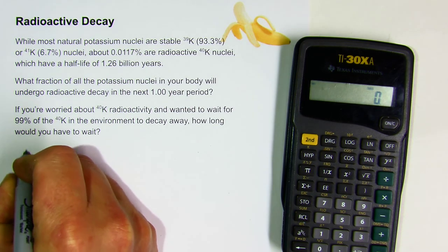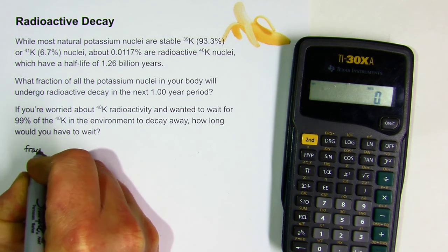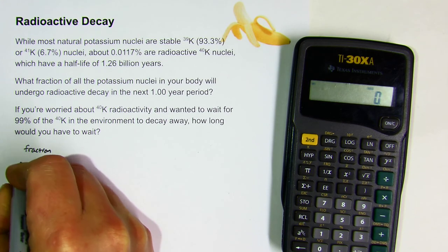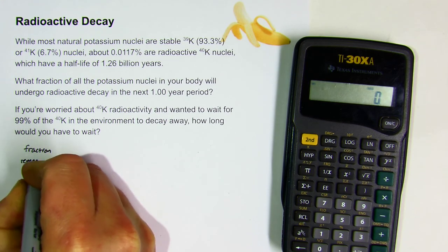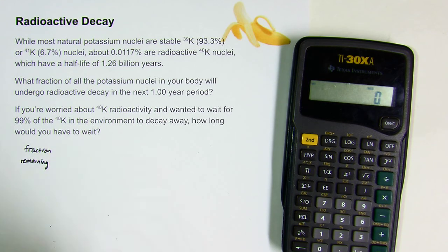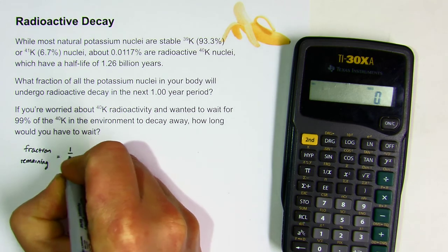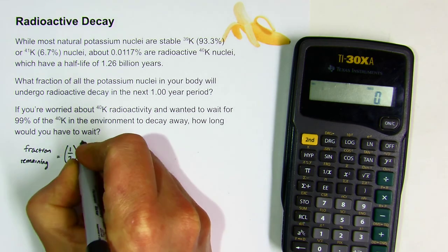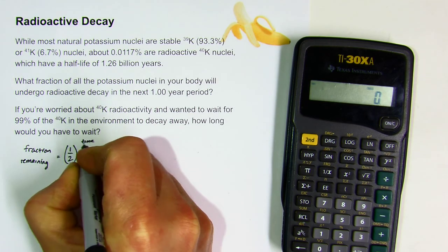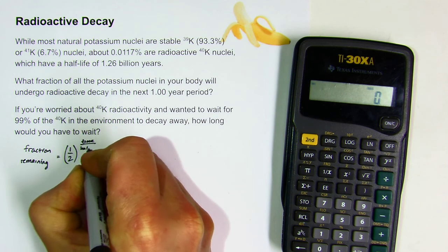In the previous lecture we introduced the mathematical model that can be used to work out half-life questions, and that is that the fraction remaining is one-half to the however much time has passed over the half-life time.